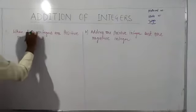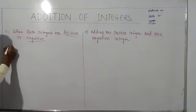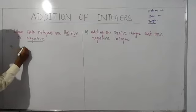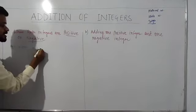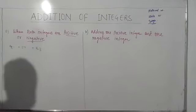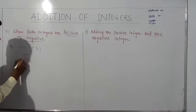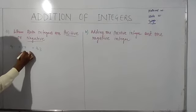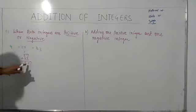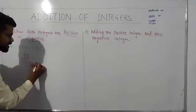The first case is when both integers are positive. For example, with positive integers like plus 57 and plus 33, we simply add 57 plus 33. We get 90. So 90 is the answer.